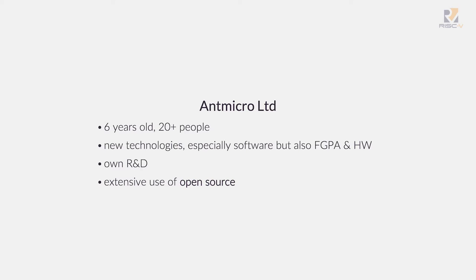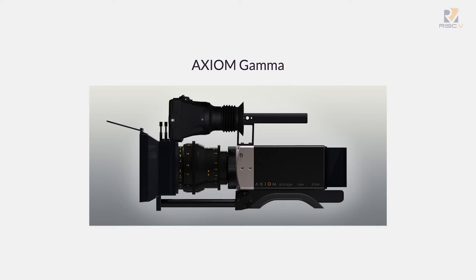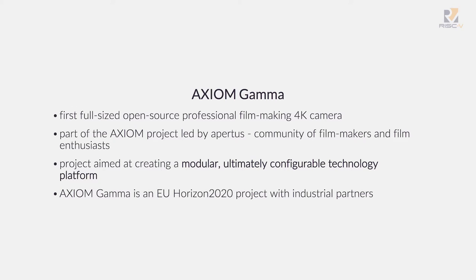So what about the Axiom camera? It's an actual big filmmaking camera with 4K resolution, meant to revolutionize the film industry. This is just a 3D sketch of what the camera will look like, but the actual project is on the way — we're actually building this. It's not only about building a camera, but building a modular platform that's configurable, modular, and gives full control over filmmaking into the hands of the makers and the film community.